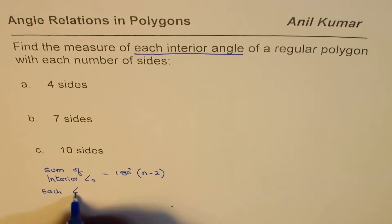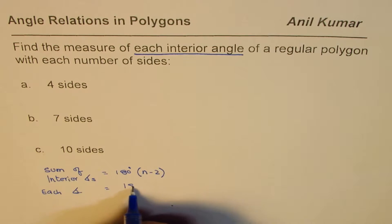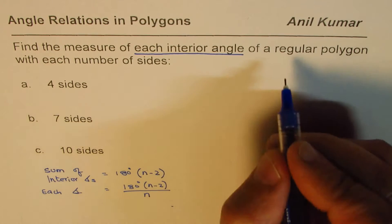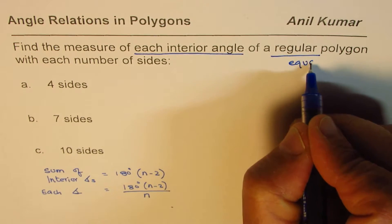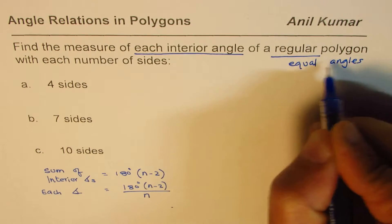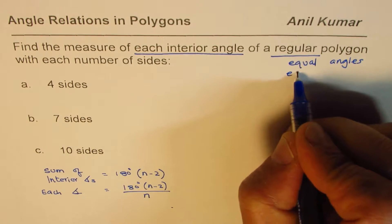Each angle will be equal to the sum, which is 180 degrees times n minus 2, divided by number of angles, which is n. These are regular polygons, means equal angles. Equal angles and equal sides.